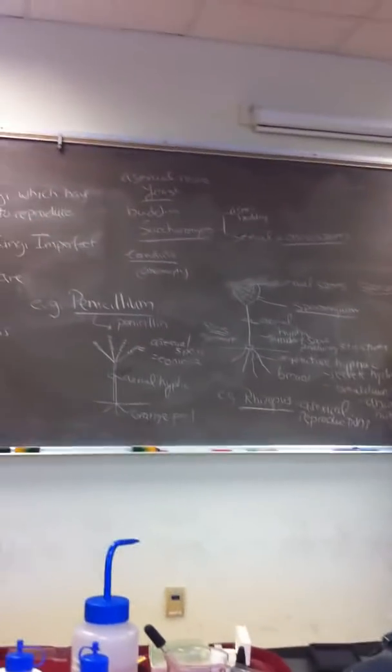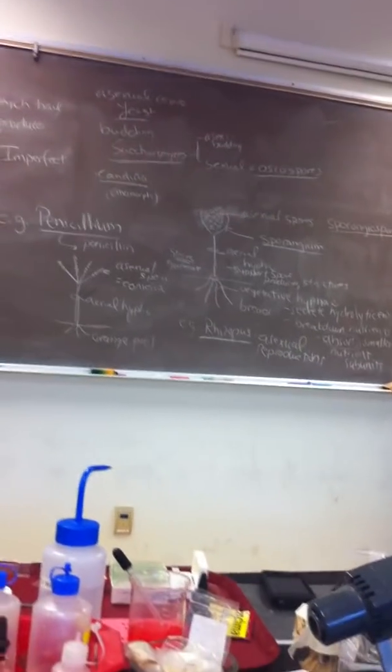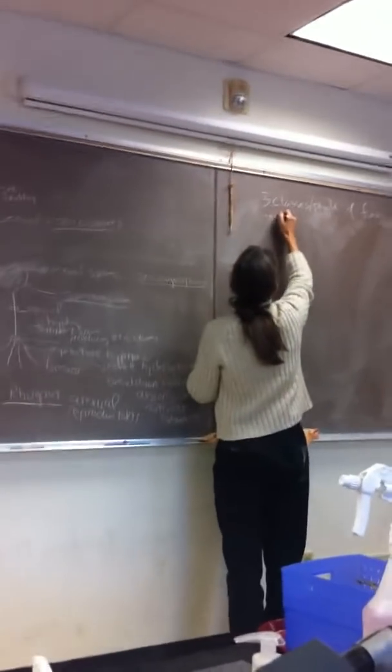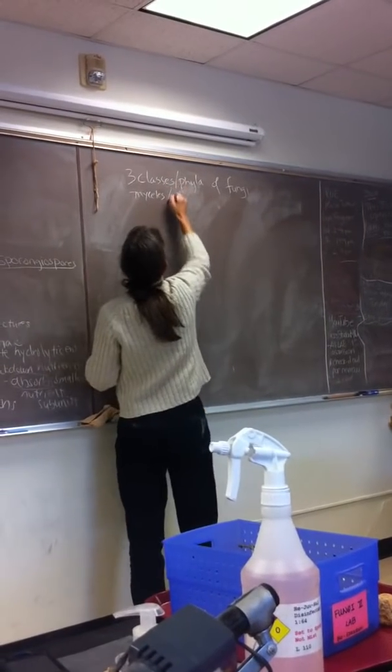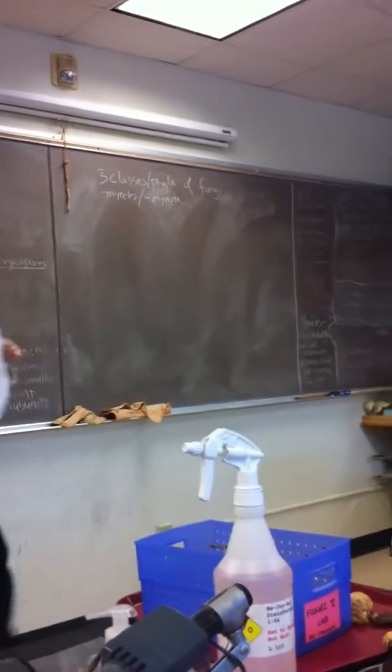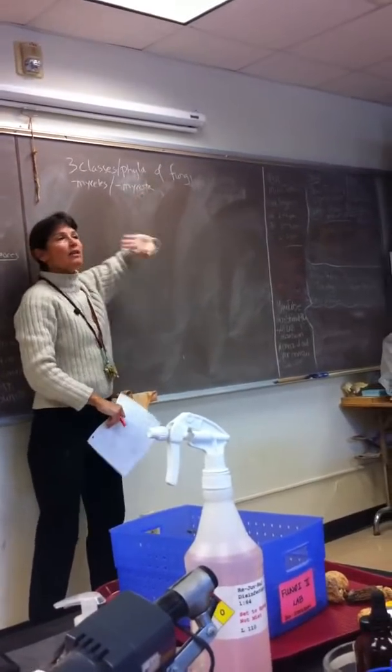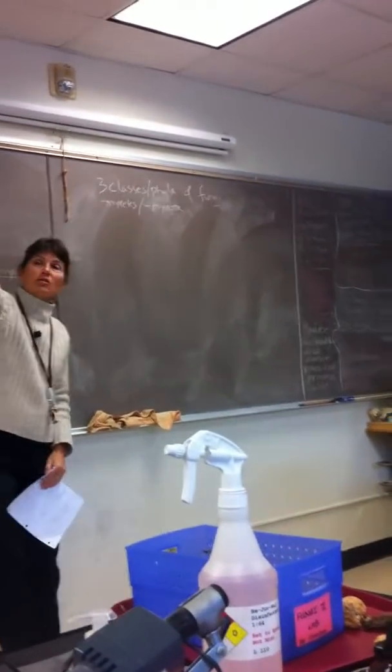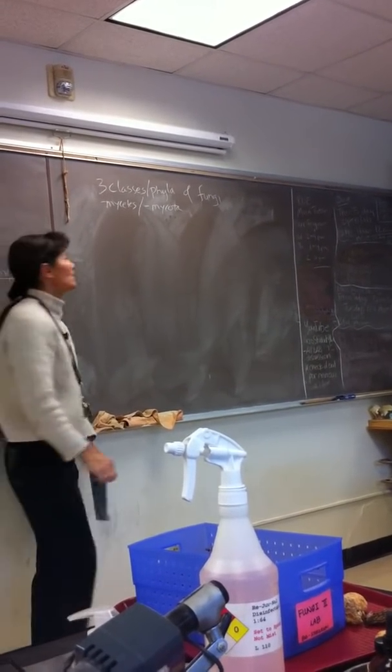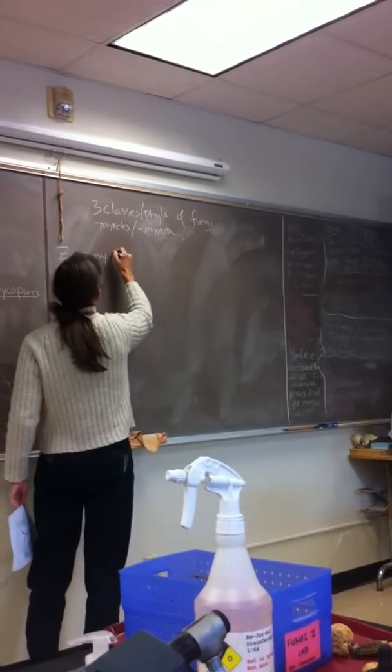So let's just put up on the board those three classes of fungi and what are the characteristics that they share. So three classes, and I'll put classes for now. And classes, the ending you'll see is mycetes, and phyla, the ending you'll see is mycota. On the lab practical, you guys, I don't care. You can put the class ending, mycetes, or you can put the phylum ending, mycota. Either one is fine. You'll see on the posters they're using the class ending, zygomycetes, ascomycetes, basidiomycetes. So let's start with the more primitive, zygomycetes.